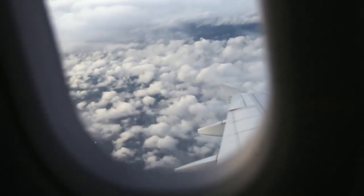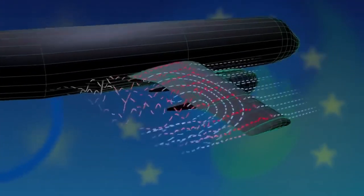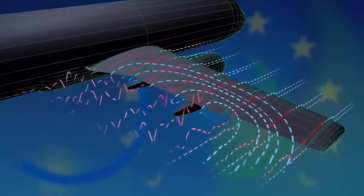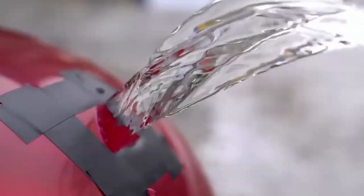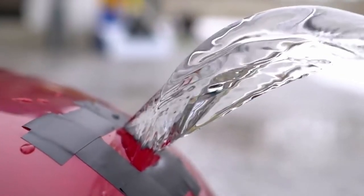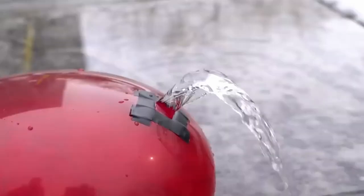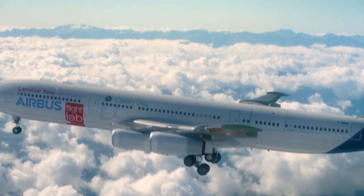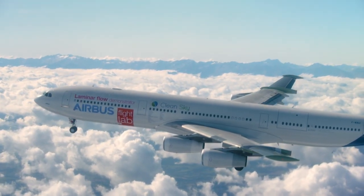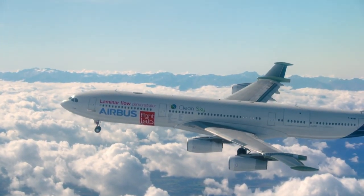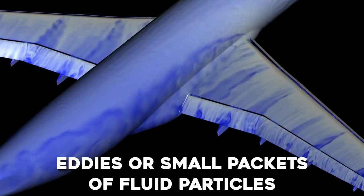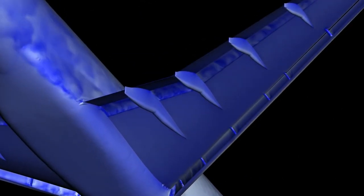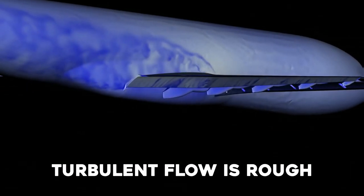When a fluid is flowing through a closed channel, such as a pipe or between two flat plates, either of two types of flow may occur depending on the velocity and viscosity of the fluid: laminar flow or turbulent flow. Laminar flow occurs at lower velocities, below a threshold at which the flow becomes turbulent. The threshold velocity is determined by a dimensionless parameter called the Reynolds number, which also depends on the viscosity and density of the fluid and the dimensions of the channel. Turbulent flow is a less orderly flow regime characterized by eddies or small packets of fluid particles, which result in lateral mixing. In non-scientific terms, laminar flow is smooth, while turbulent flow is rough.